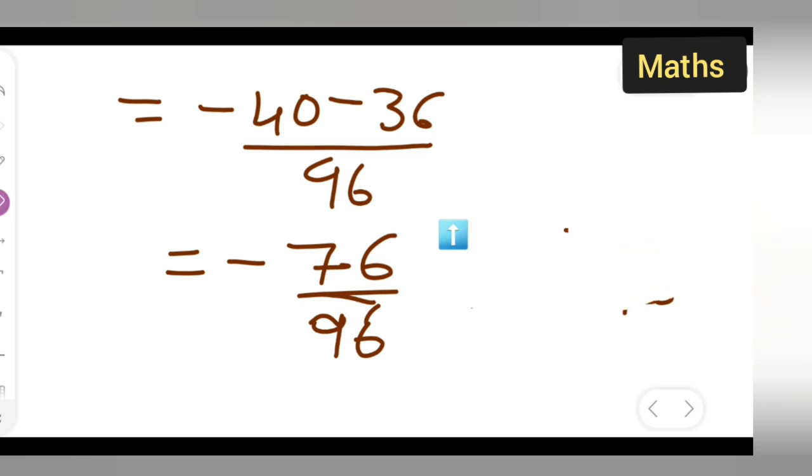Now basically we can cancel this because this is an even number. 2 times 4 is 8 carry 1, 2 times 8 are 16. 2 times 3 are 6, 2 times 8 are 16. So what we are getting is -38 upon 48.